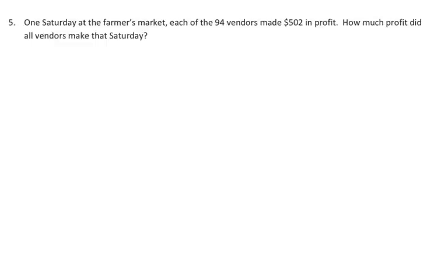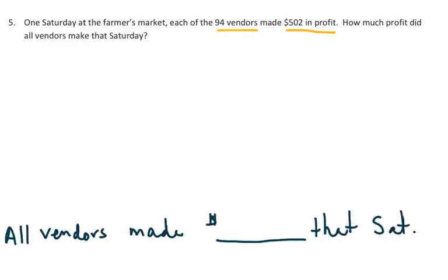Number five from the homework says, one Saturday at the farmer's market, each of the 94 vendors made $502 in profit. How much profit did all vendors make that Saturday? So I'm going to start with my target sentence. And the target sentence says, all vendors made blank dollars that Saturday.